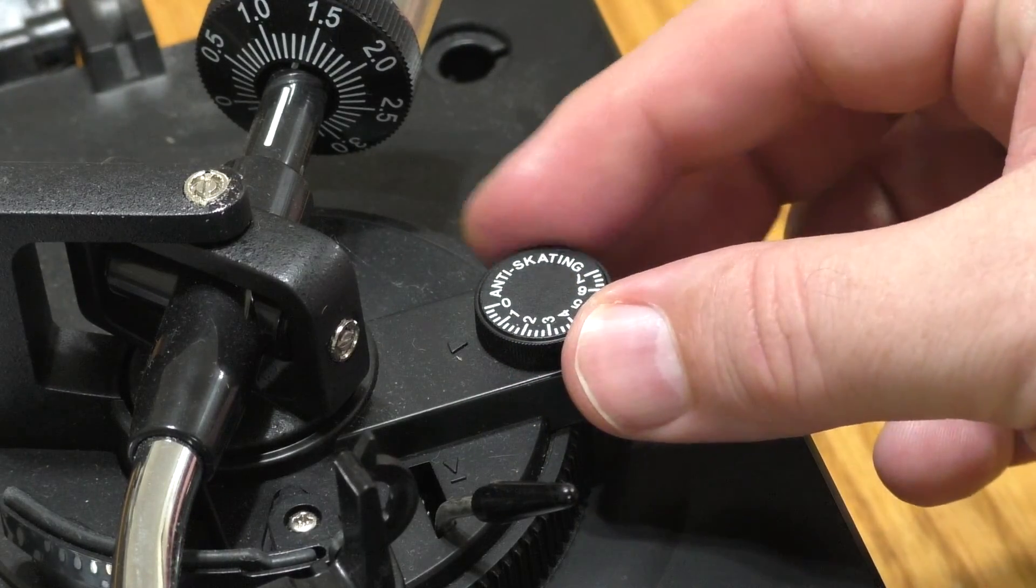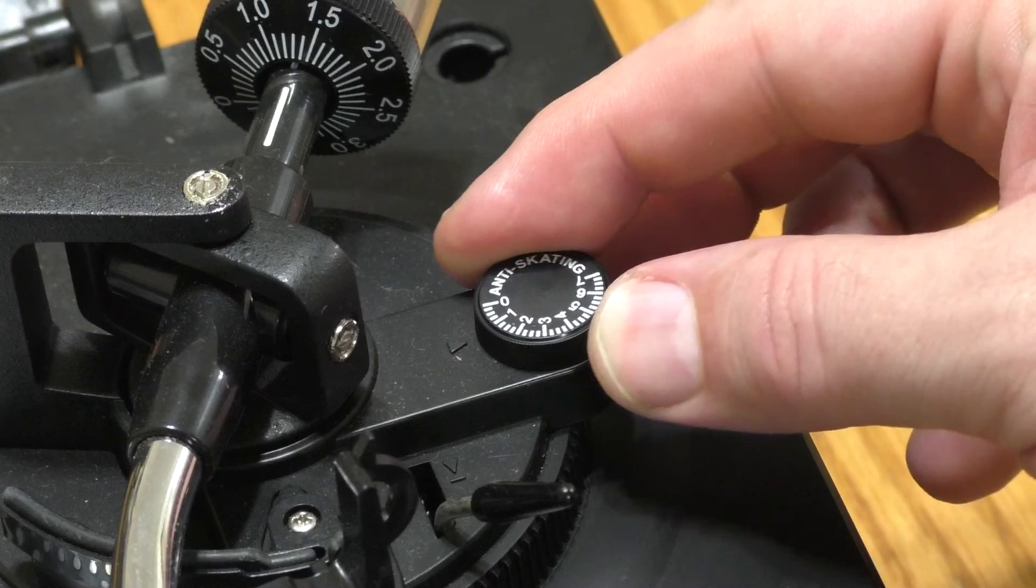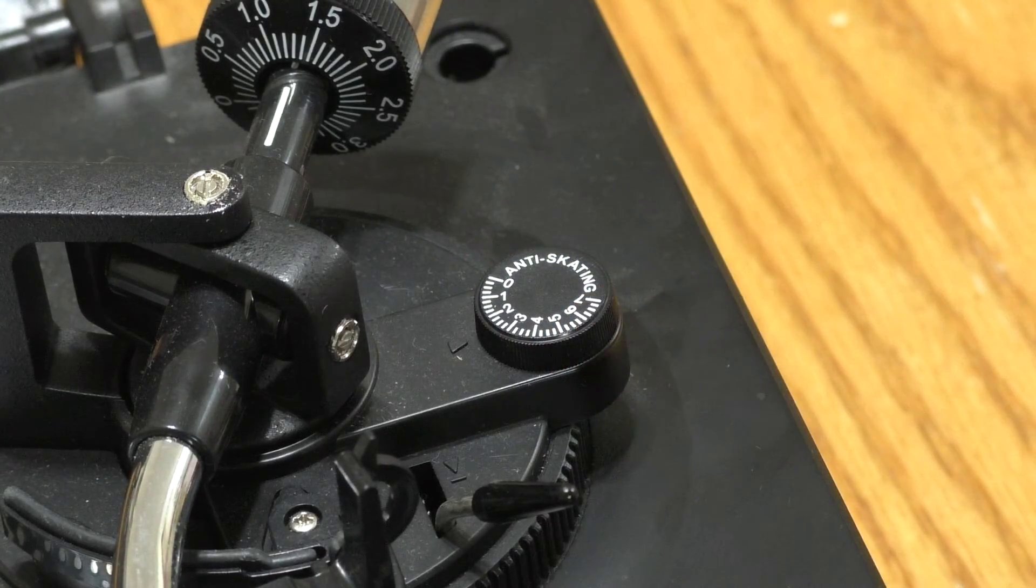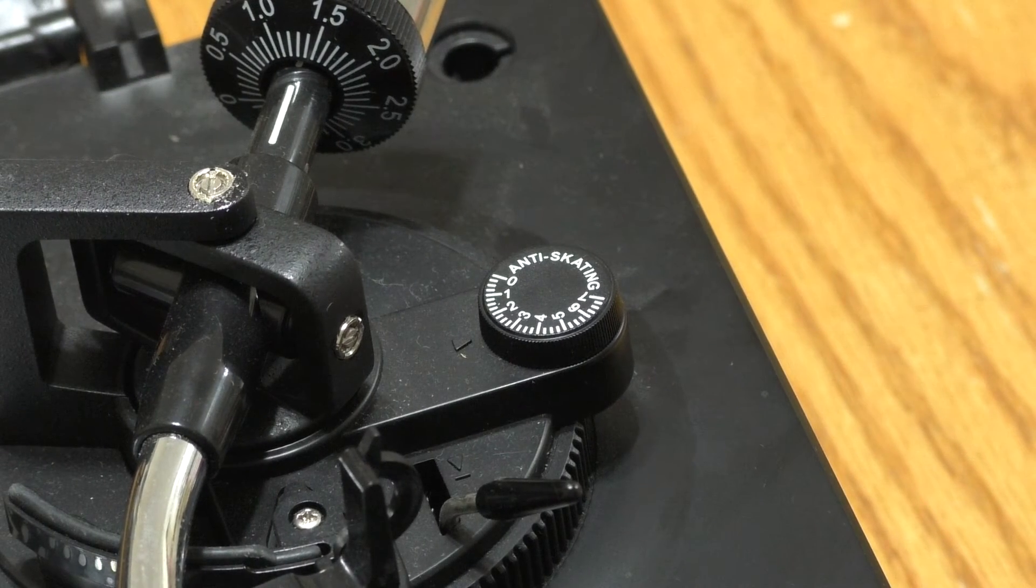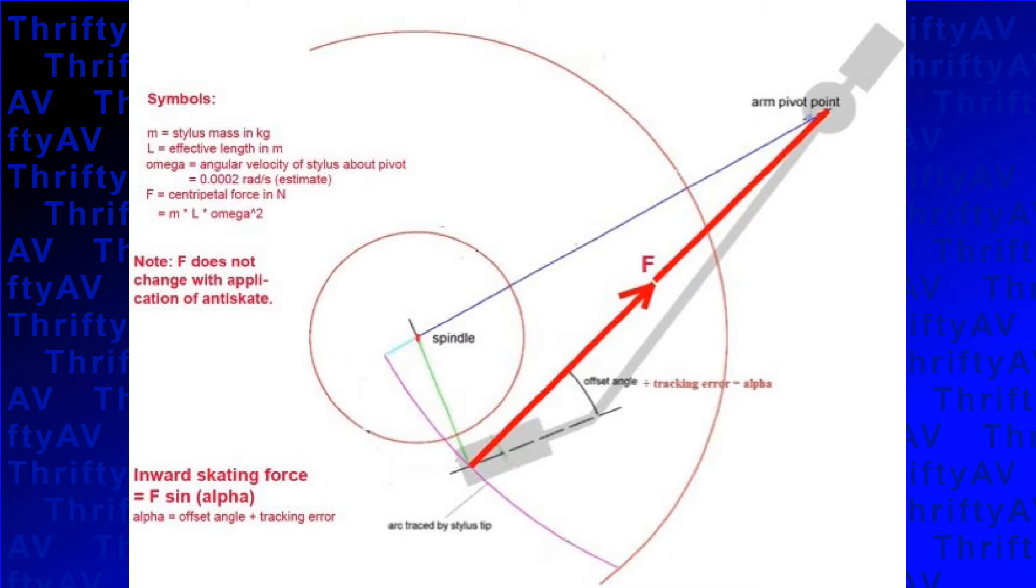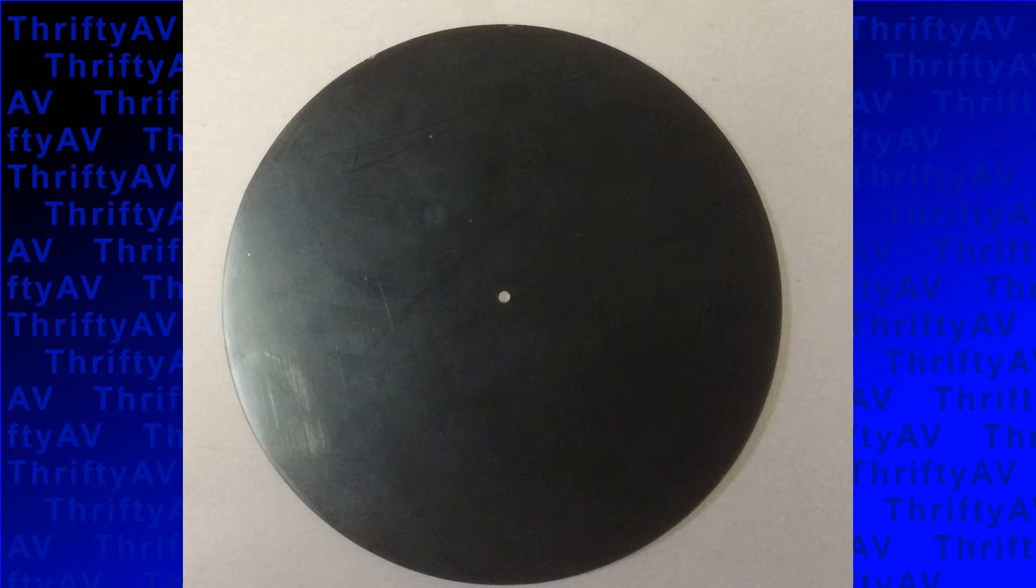Many turntables have an anti-skate adjustment. A rule of thumb is that the anti-skate should be set to the same number as the tracking force, but the spring used for anti-skate adjustment can be weak or worn, preventing optimal adjustment. When the anti-skate adjustment is optimized, the tonearm should not push the needle toward either side of the record groove. To ensure that the anti-skate adjustment is balanced, you can use a vinyl blank with no grooves or the blank side of an EP.